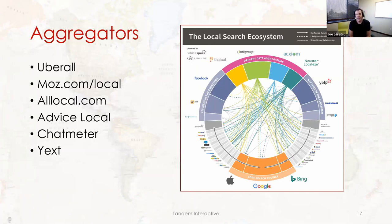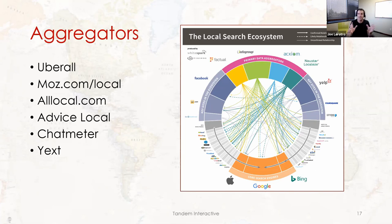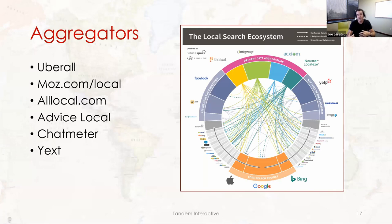Something that is going away in the local search industry is aggregators. Google has built out Google My Business to the point where they don't need many external resources to verify business information anymore. When Google was originally building their Maps databases, they relied on these aggregator sources, but today they can count on their own data. I'd still use aggregators if you have budget, but within six months, they may not matter much at all.